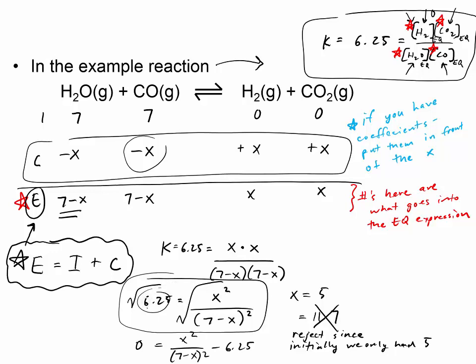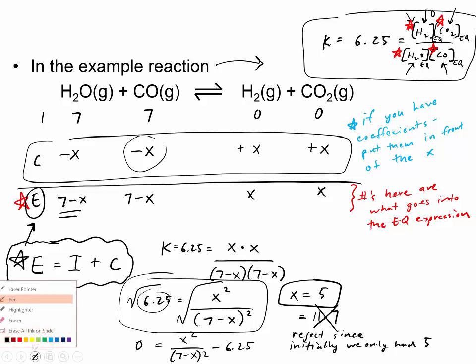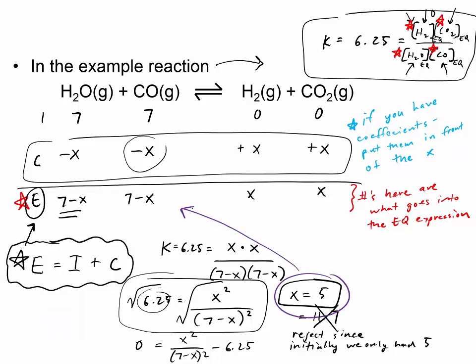When we start doing actual equilibrium problems with molarities, the numbers get very small and messy in the quadratic formula. So with x = 5: seven minus x equals two. At equilibrium we have two molecules of H₂O, two molecules of CO, five molecules of H₂, and five molecules of CO₂. That is our first equilibrium problem solved using an ICE table.